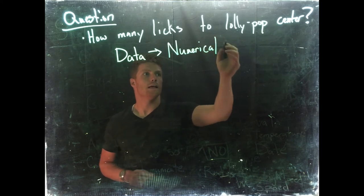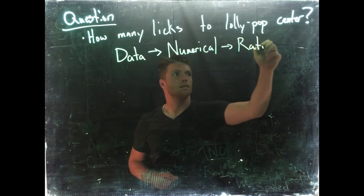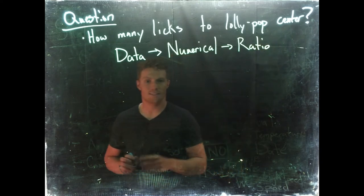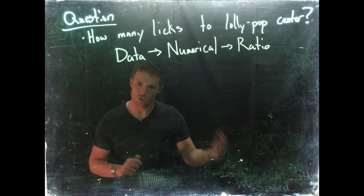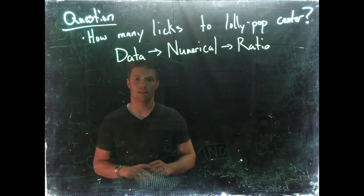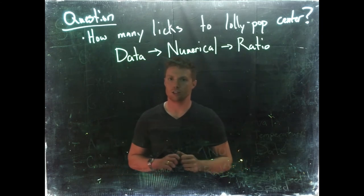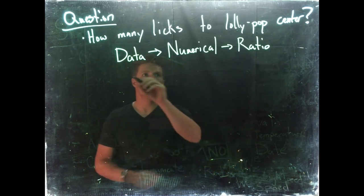We are looking at the number of licks, so we have numerical and specifically we have ratio, because if somebody takes 10 licks to get to the center and somebody takes 20 licks, the person who took 20 licks took two times as many as the person who took 10. So we have numerical ratio data.